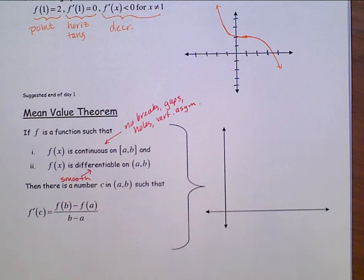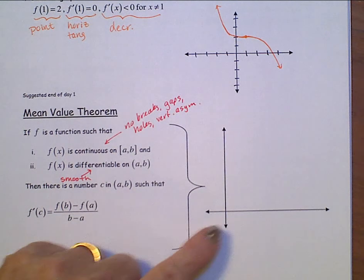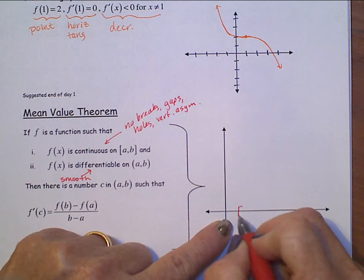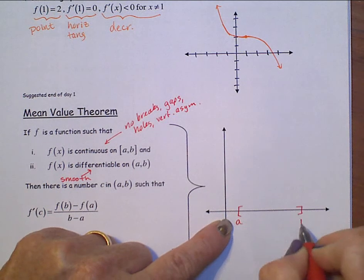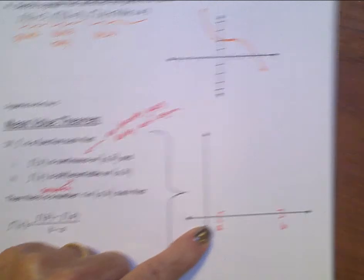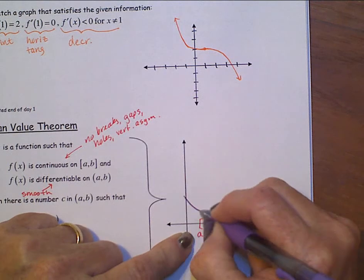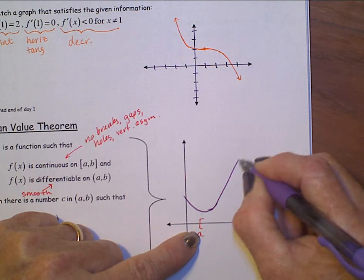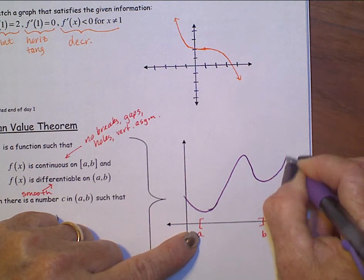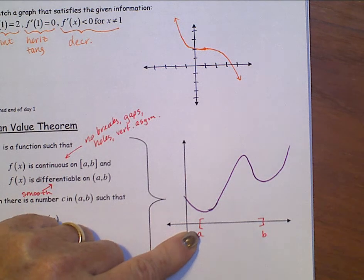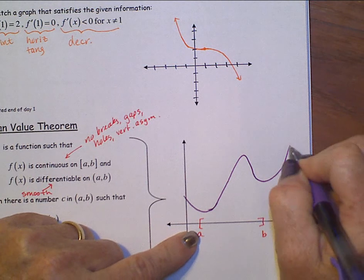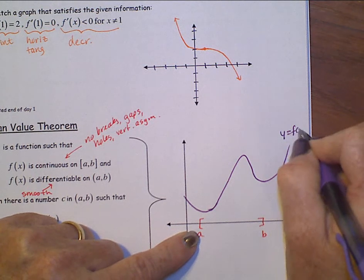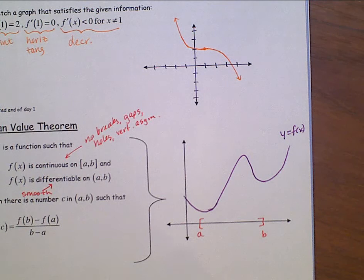Let's draw some function that's continuous on an interval from a to b. How about something like that? There's some continuous function on this interval from a to b.